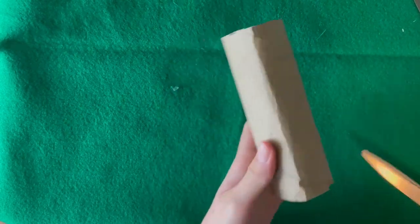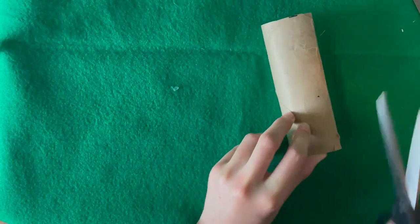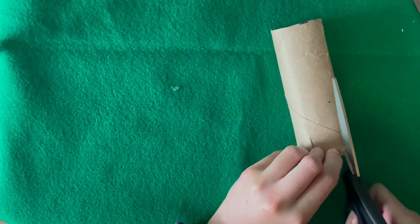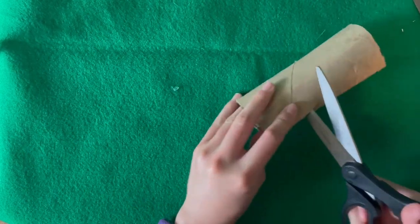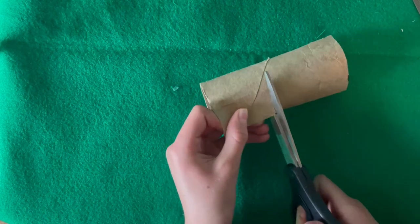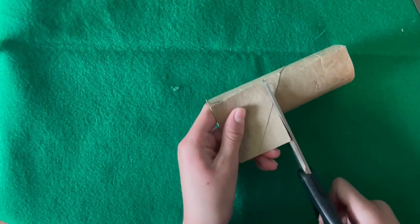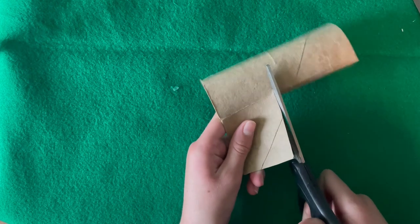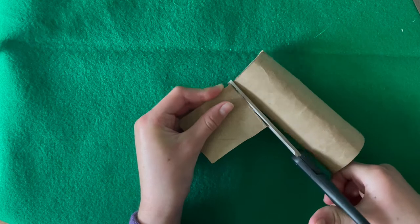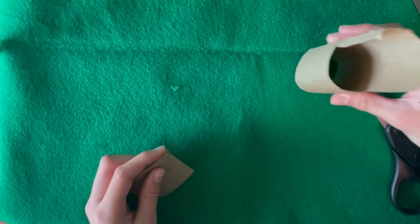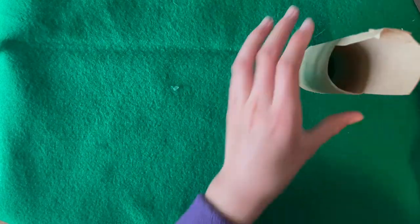And then we are going to use the scissors again to cut these slits down to the dots. And we're going to cut over to the other dot and up. And now we have a chair. It's a Barbie chair.